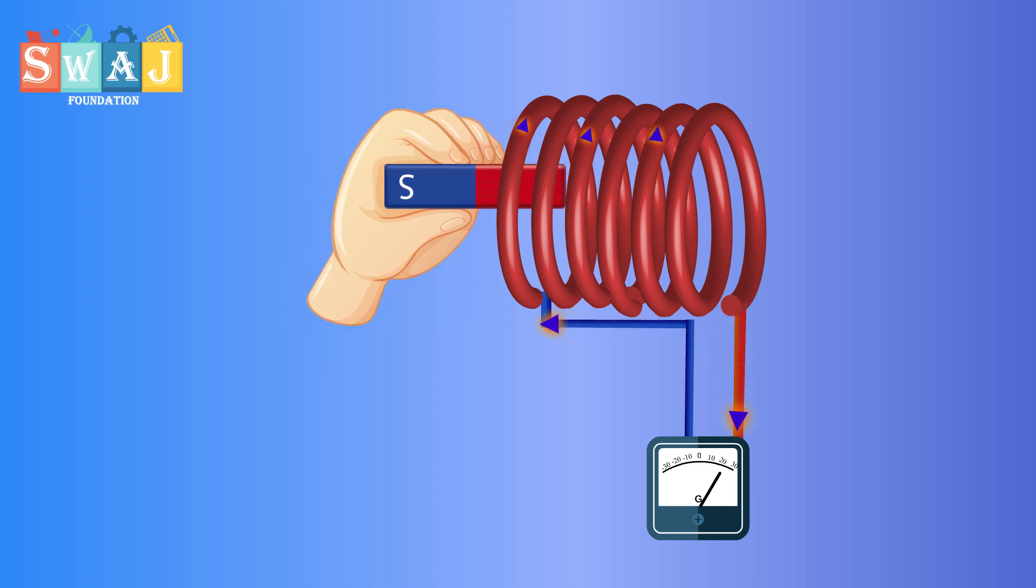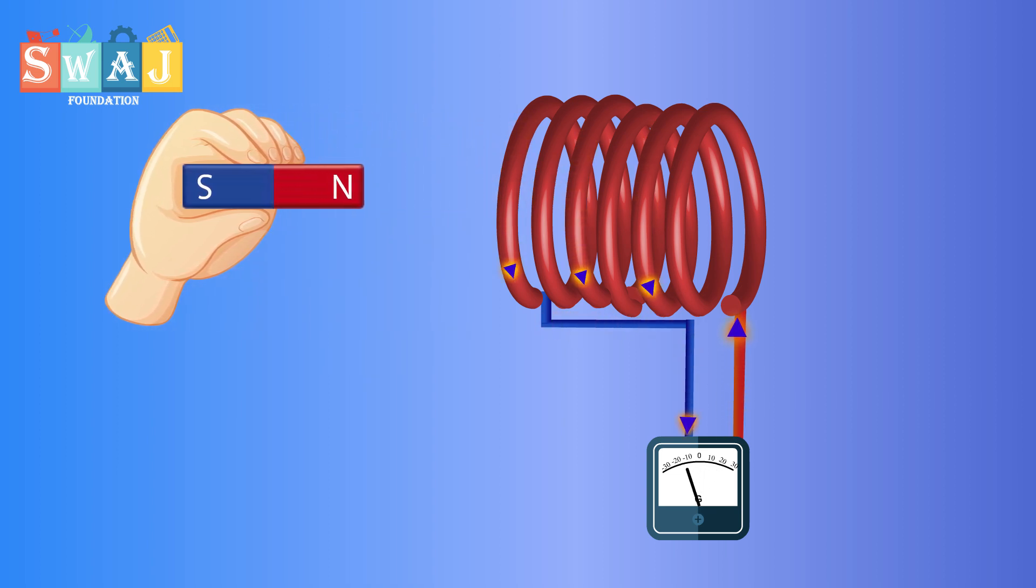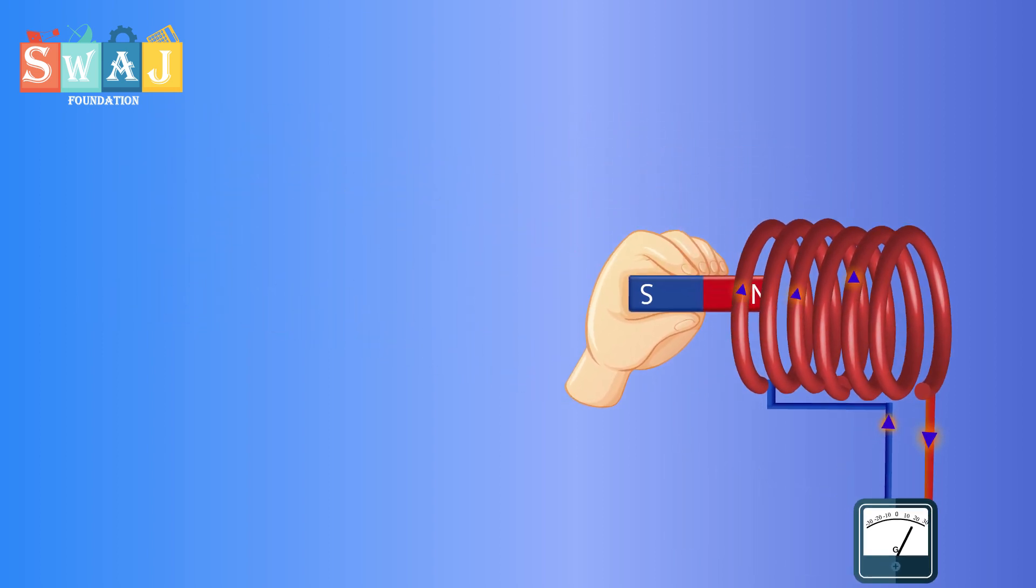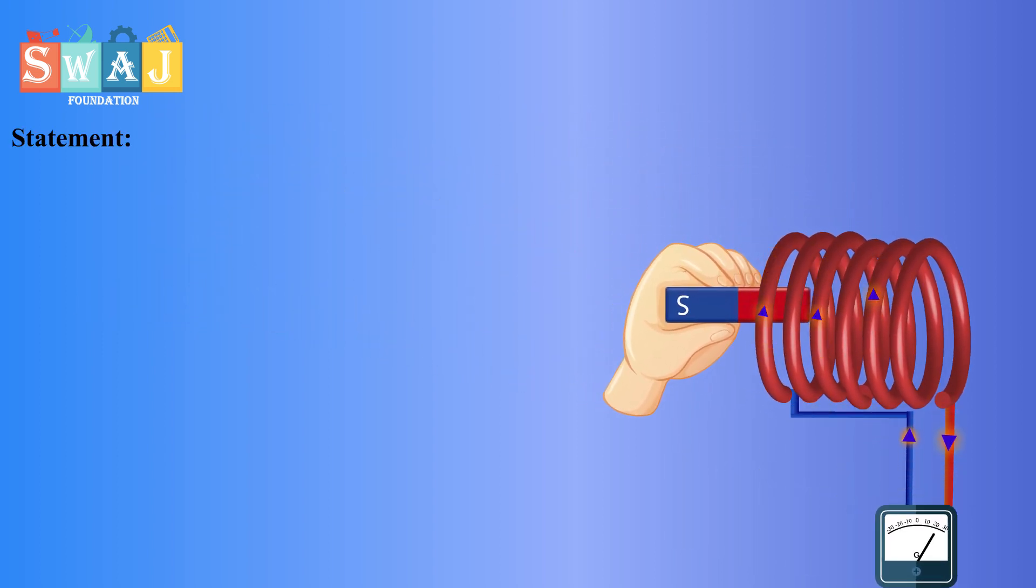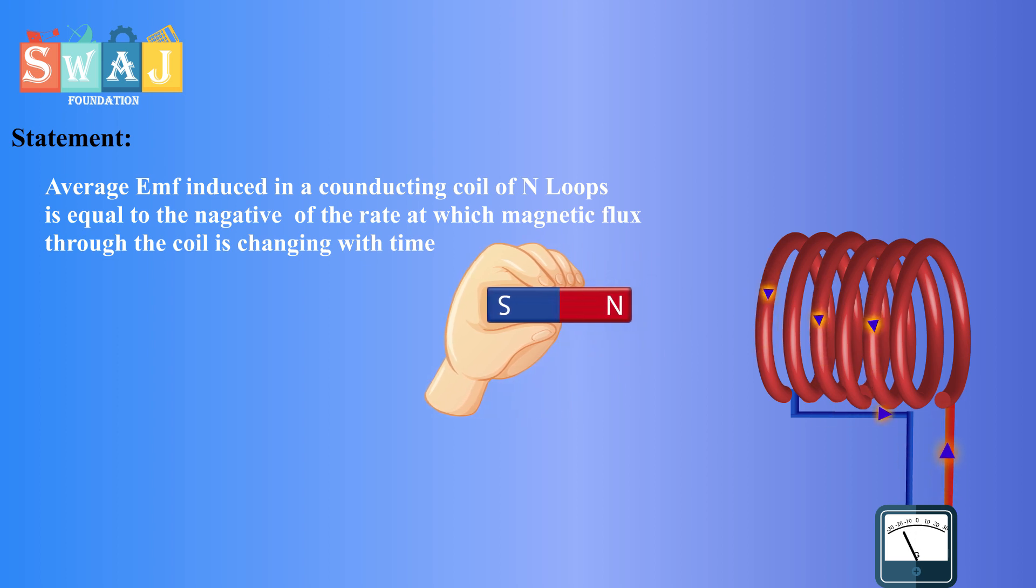This conclusion was first derived by Faraday, so this is known as Faraday's law of electromagnetic induction, which states that the average EMF induced in a conducting coil of N loops is equal to the negative of the rate at which the magnetic flux through the coil is changing with time.